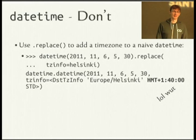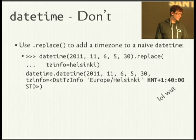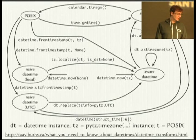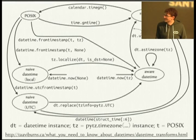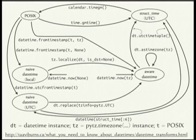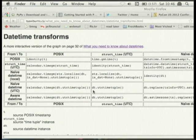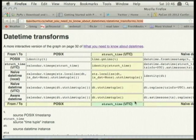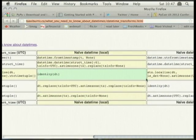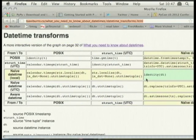replace() is just as bad — it doesn't provide any extra information for TZinfos. There's a diagram of suggested transforms here. I was going to say someone should make a cheat sheet, but I did, and it's linked from the presentation. When the slides go up you can follow the link and see all the different ways you can transform from one thing to another.